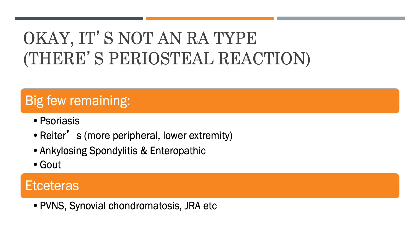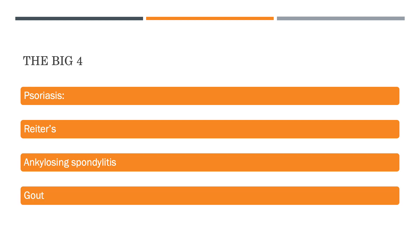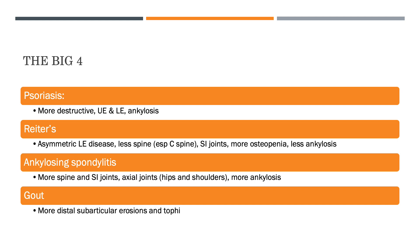When we notice periosteal reaction without standard features of rheumatoid arthritis, we think psoriasis, Reiter's disease, ankylosing spondylitis, or gout. Psoriasis is more destructive, involving upper and lower extremity periphery and leading to ankylosis. Reiter's tends to be asymmetric lower extremity disease, less involving the spine, affecting sacroiliac joints, with more osteopenia and less ankylosis. Ankylosing spondylitis involves mainly the axial skeleton including the spine. Gout causes more distal subarticular changes.